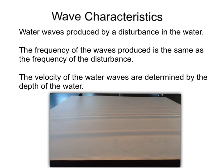Water waves are produced by a disturbance in the water, whether you're using a dowel or poking your finger in the water to produce waves. The frequency of the waves produced is the same as the frequency of the disturbance. The velocity of the water waves is determined by the medium, in this case the depth of water. Throughout our ripple tank activity, we kept the depth of water constant.